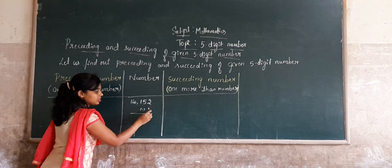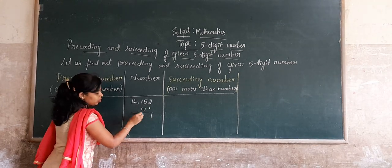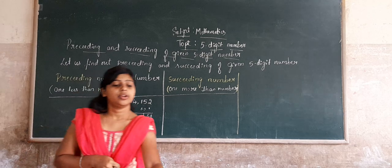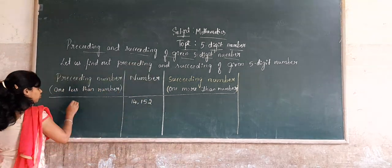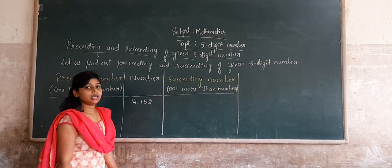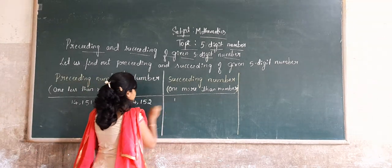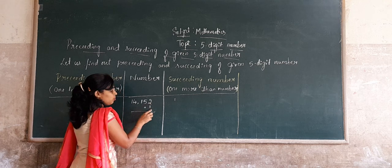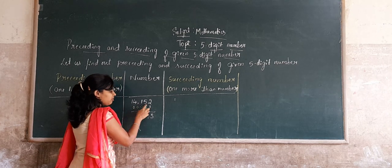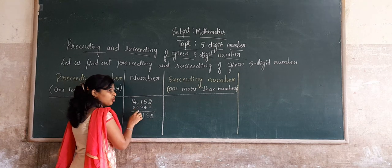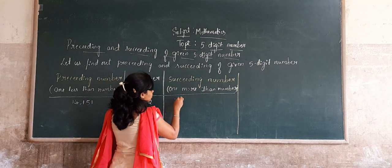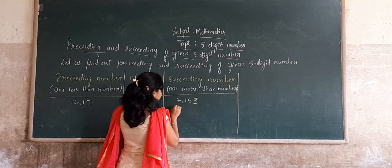For the preceding number, we subtract 1 from the given number 14,152. We get 2 minus 1 equals 1; the remaining digits stay as 5, 1, 4, 1. So the preceding number is 14,151. For the succeeding number, we add 1 to 14,152. We get 2 plus 1 equals 3; the remaining digits stay the same. So the succeeding number is 14,153.